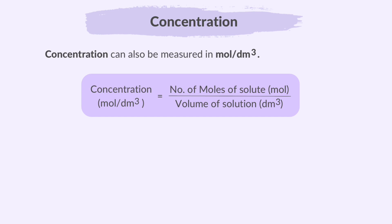Now, concentration can be measured in grams per dm cubed and also mole per dm cubed. So, how do we find the number of moles of solute? Simply use the mole formula. Number of moles equals mass divided by molar mass.